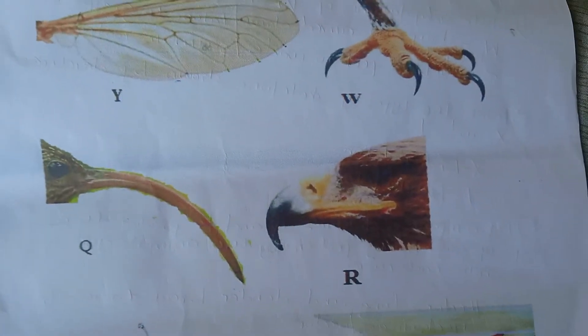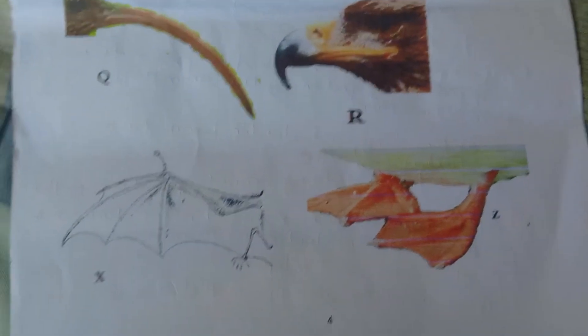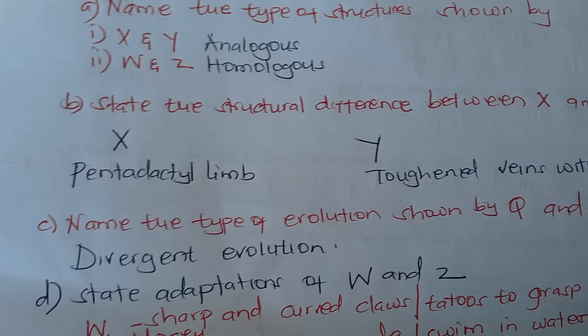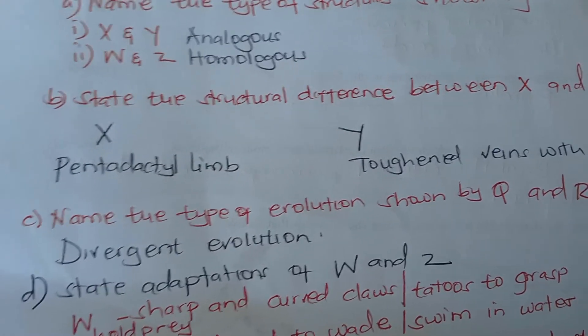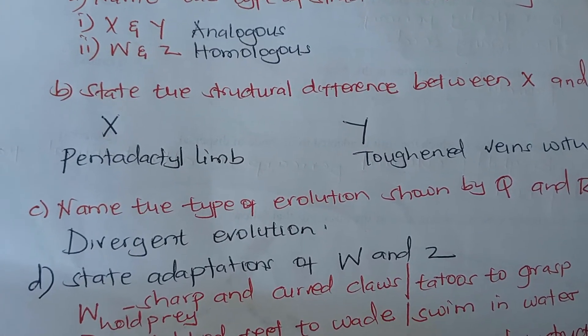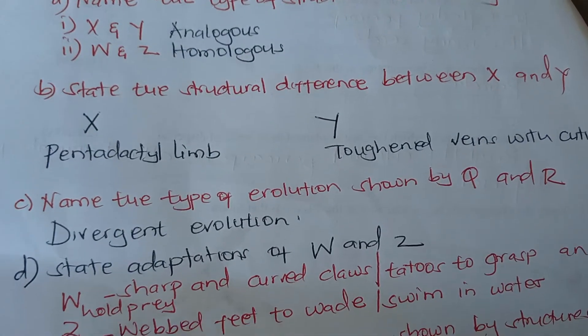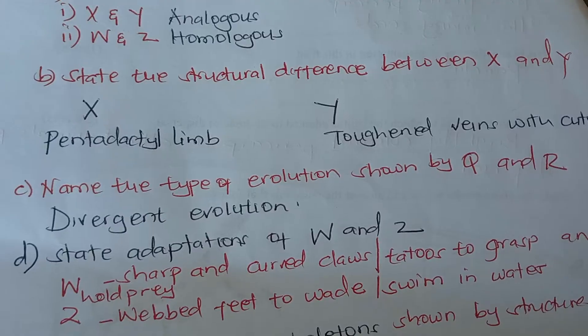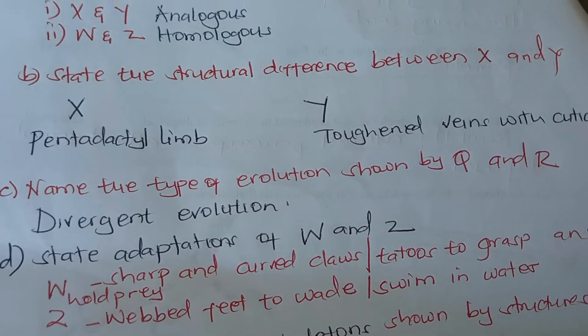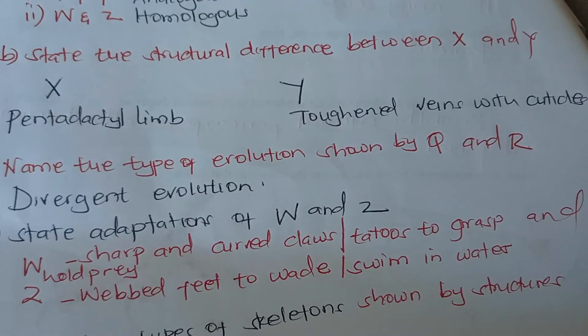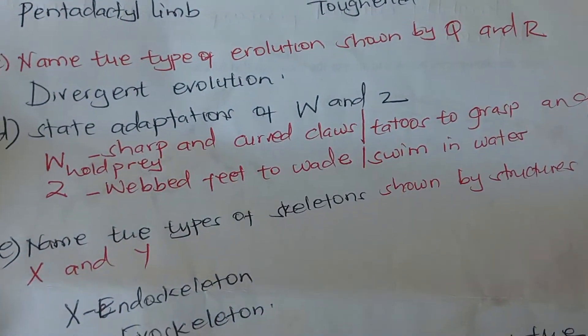For Question 3, you are given photographs Y, W, Q, R, X, and Z. X and Y are analogous structures, while W and Z are homologous structures. The structural differences are: X is a pentadactyl limb, while Y is a toughened vein with cuticles.